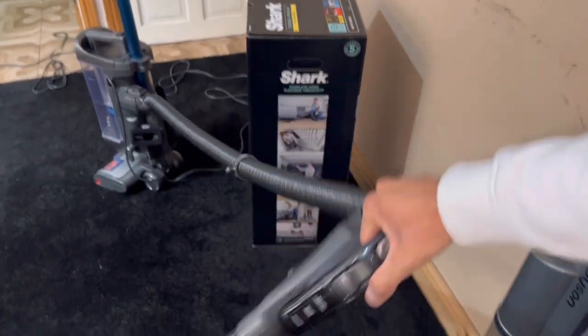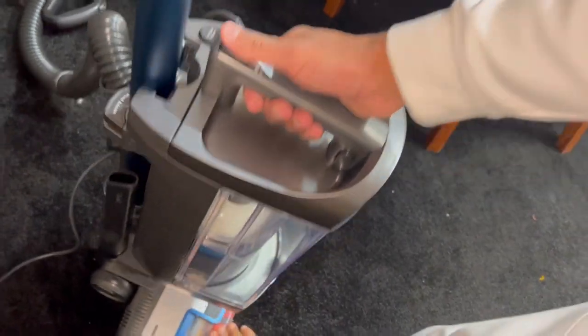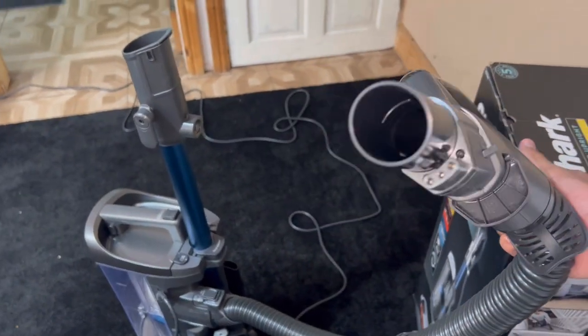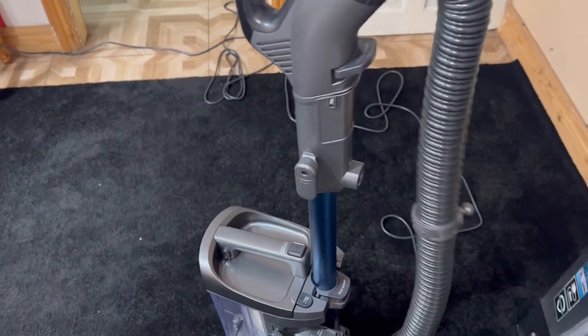However, because of the design, the machine will topple over. But that's what the power lift-away feature is for, so you don't have that issue. What I like about this Shark is the air path is a lot wider than the smaller versions.